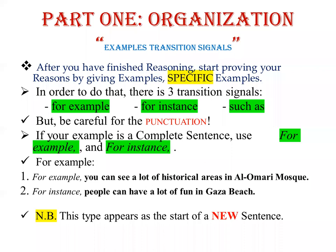After finishing the transition signals for reasons, we will move to examples. These are really important because we give more examples than reasons — we give about three reasons, but for each reason we give at least three examples, so in conclusion we will have about nine examples. After you have finished reasoning, start proving your reasons by giving specific examples. These examples must contain actual names or anything specific.